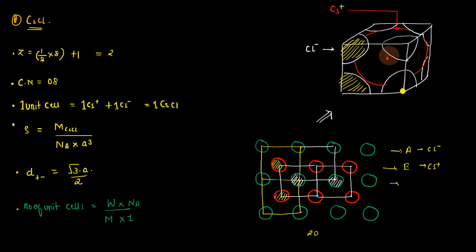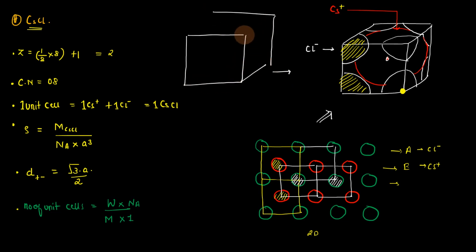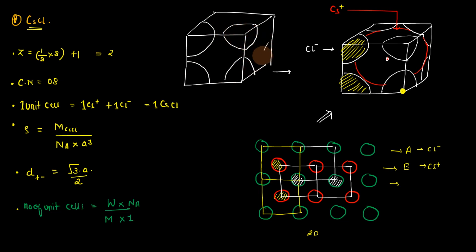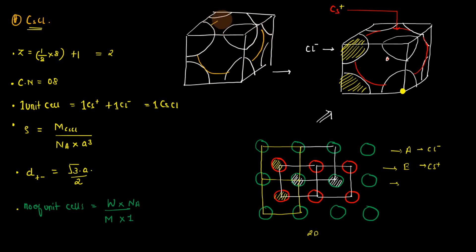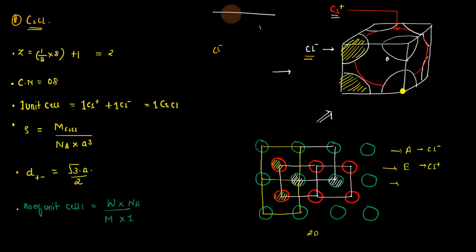What we usually visualize is considering that Cl⁻ ions are making a simple cubic unit cell and your cesium is trapped inside that body cavity. It can be assumed vice versa — you can also view this as if your cesium ions are forming a body-centered lattice, with the chloride ion trapped inside. The diagram can be viewed in any fashion, but in most standard reference books, we consider chloride ions forming a simple cubic unit cell with cesium present inside the body cavity.